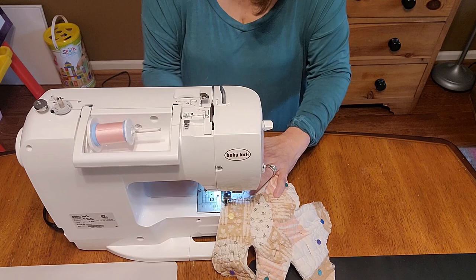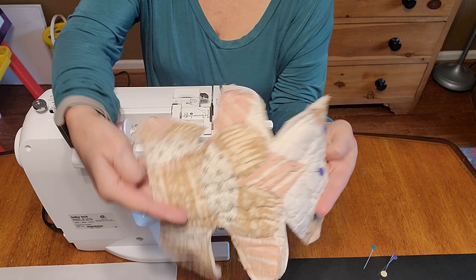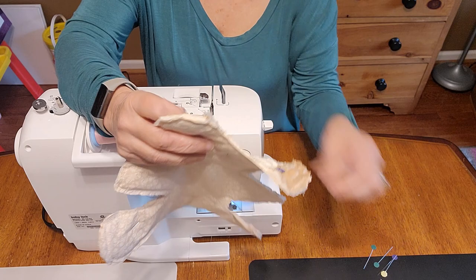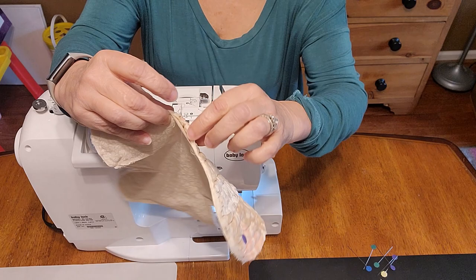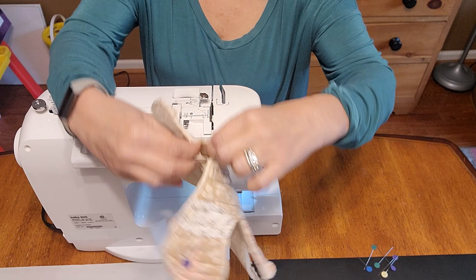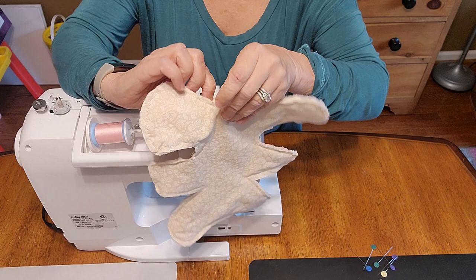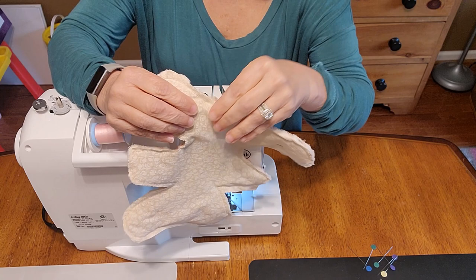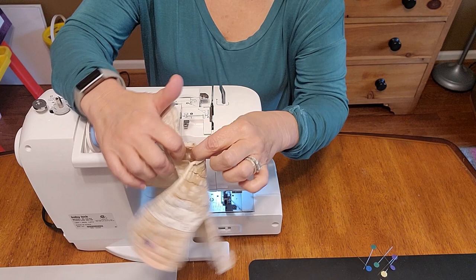So we have quilted all the way around our little teddy bear, and now it is time to make him fluffy. We didn't quilt all the way around. We actually left a little place right here where we can put his stuffing in. Actually, I should have left a little more space. Just pull some of that, which I didn't lock that first thread, so we can get that space that we need. So, let's stuff this guy.